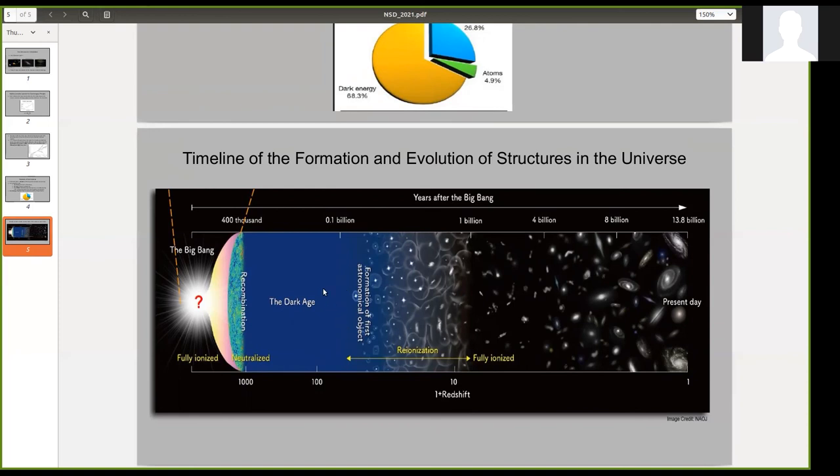And this dark age lasted nearly 100 million years until the first stars and galaxies came into existence. These stars and galaxies ionized the universe again. Hence it is called the reionization era, which lasted up till a billion years roughly speaking.